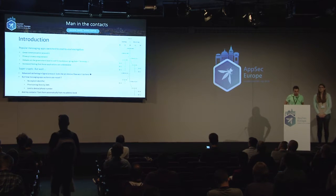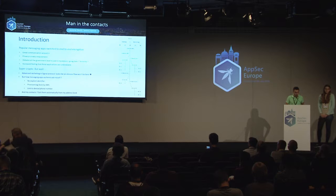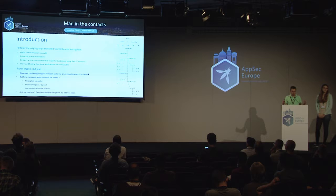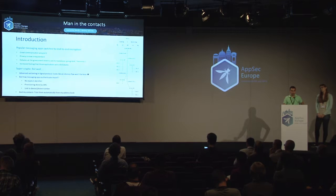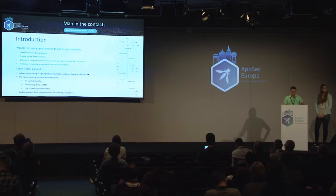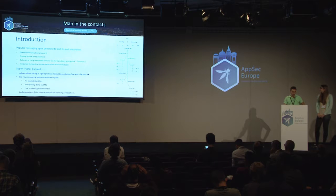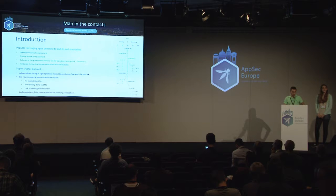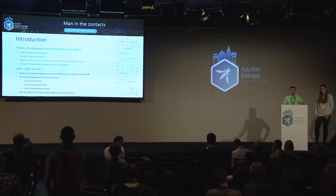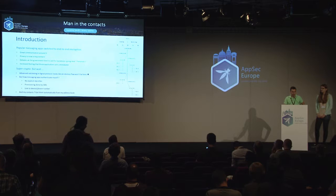Over the last two years there's been a big fuss around secure messaging. All those chat applications switched to end-to-end encryption, which is really great from a privacy point of view. Privacy is now somehow a requirement. And it was so strong that governments — in the UK and France — started saying maybe this could be bad because of terrorists, going dark and all that. In the end, most people think those applications are unbreakable.